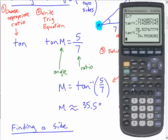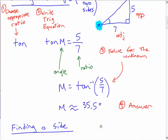But you could go, if you have a calculator, you can go 5 divided by 7 and then tangent inverse of that number or answer or whatever. Are we okay with that? That's finding an angle.